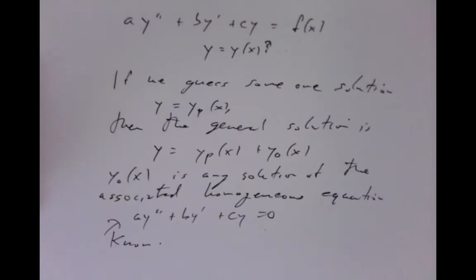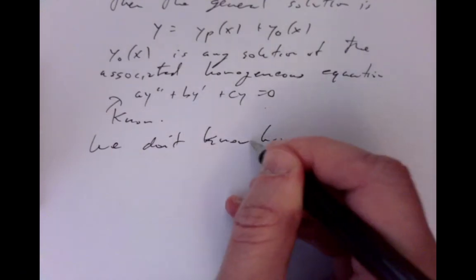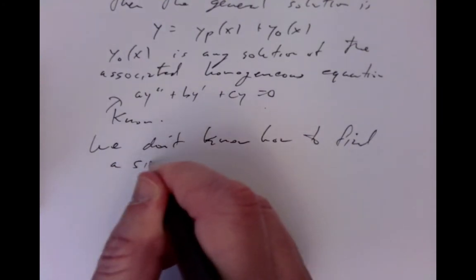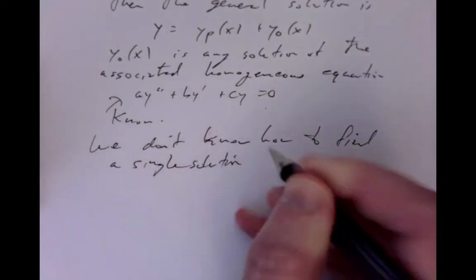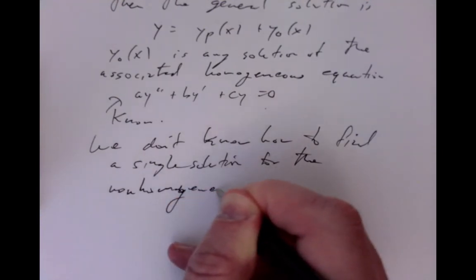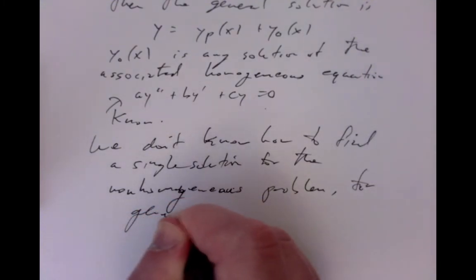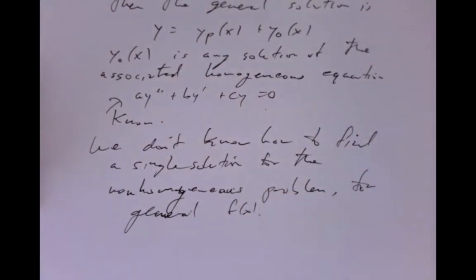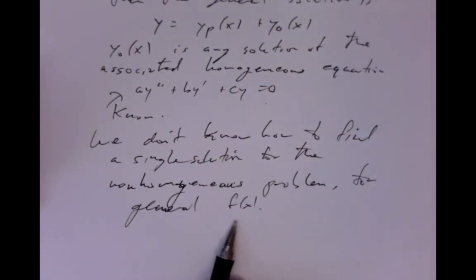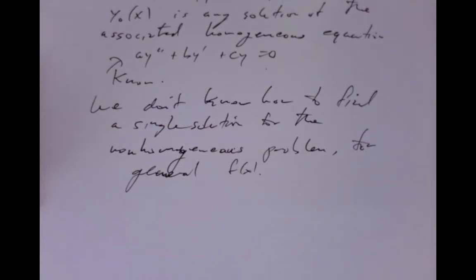The bad news is that in general no one knows how to guess a solution. We don't know how to find a single solution for the inhomogeneous problem for general functions f of x. So we'll have to make do with finding a solution for certain special f of x's — certain ones for which we have a good guess. Even then, we'll come up with a method for guessing for certain simple choices of f of x, and even then it won't always work.